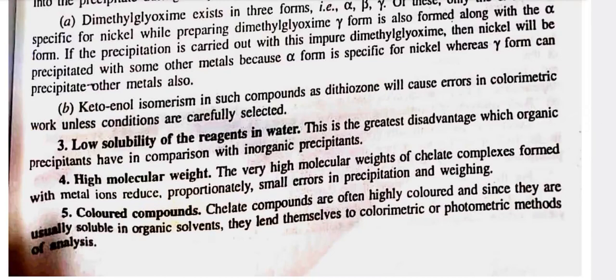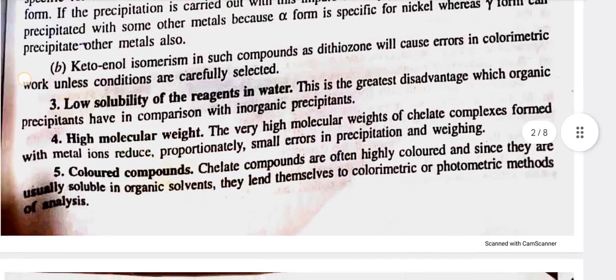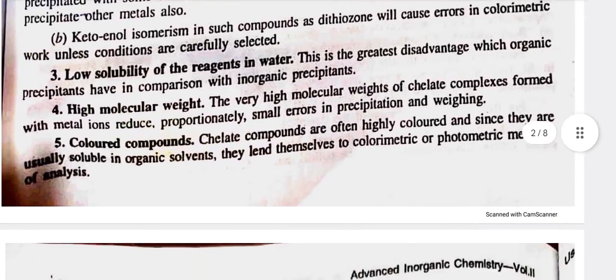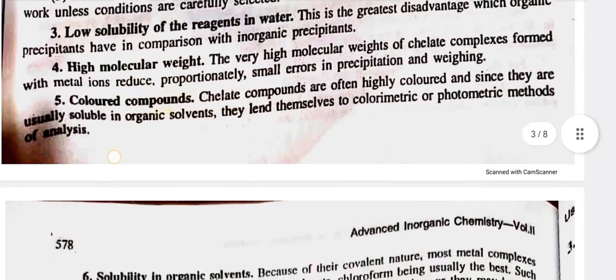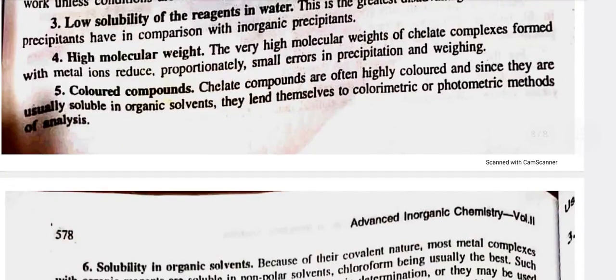Keto-enol isomerism in such compounds as dithizone will cause errors in colorimetric work unless conditions are carefully selected. Third, low solubility of the reagents in water — this is the greatest disadvantage which organic precipitants have in comparison with inorganic precipitants. Fourth, high molecular weight — the very high molecular weights of the chelate complexes formed with metal ions reduce proportionately small errors in precipitation and weighing. Fifth, colored compounds — chelate compounds are often highly colored and since they are usually soluble in organic solvents, they lend themselves to colorimetric or photometric methods of analysis.